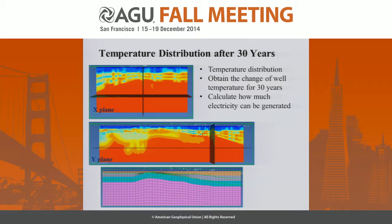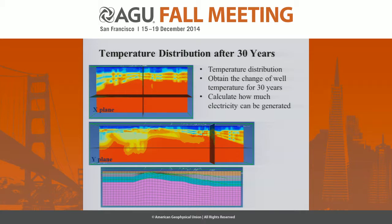After running for 30 years, we obtain this temperature distribution. We can see the production well locations and the change of temperature over 30 years. We can calculate how much electricity can be generated from this target area.